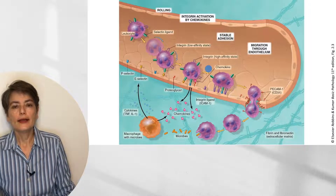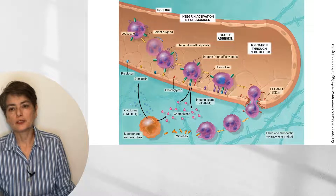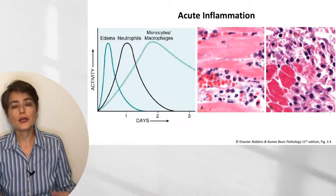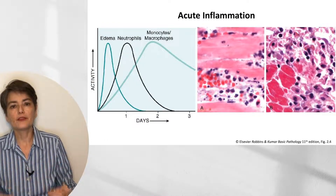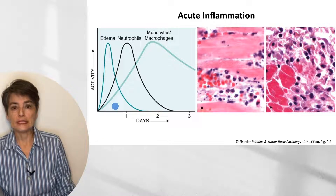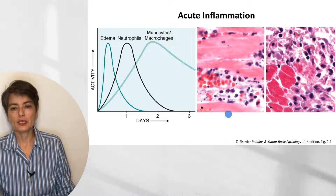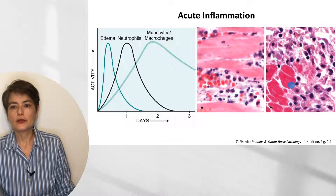The full story: the leukocyte marginate, rolls, sticks, transmigrates, and follows the chemokine/cytokine trail to the microbes. Acute inflammation follows a time-directed process. Initially you have edema, which slowly resolves. Neutrophils move in on day one, and then monocytes and macrophages come with more time. In a myocardial infarction, neutrophils mobilize immediately to address the necrotic tissue, and over the next few days macrophages come in to consume the necrotic cardiac myocytes.